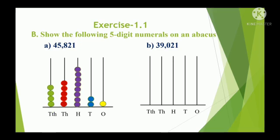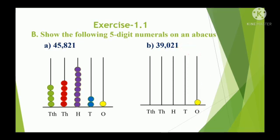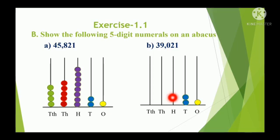Another example is 39,021. In the 1s place, the digit is 1, so draw 1 bead. In the 10s place, it is 2, so draw 2 beads: 1, 2. In the 100s place, it is 0, so no beads are needed.